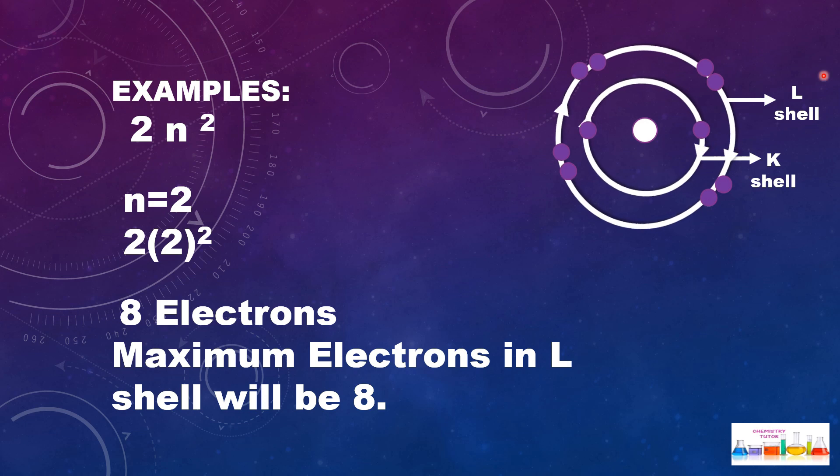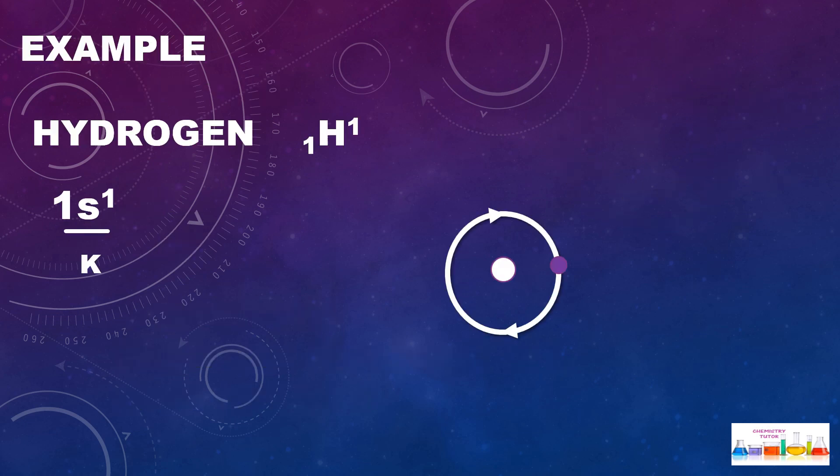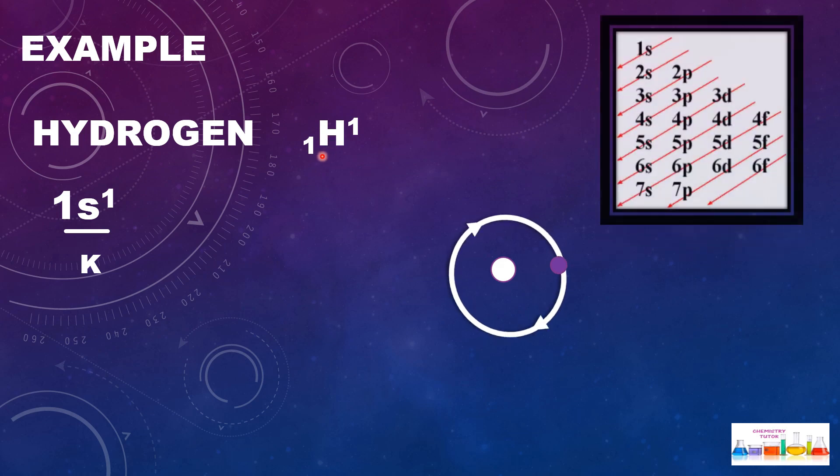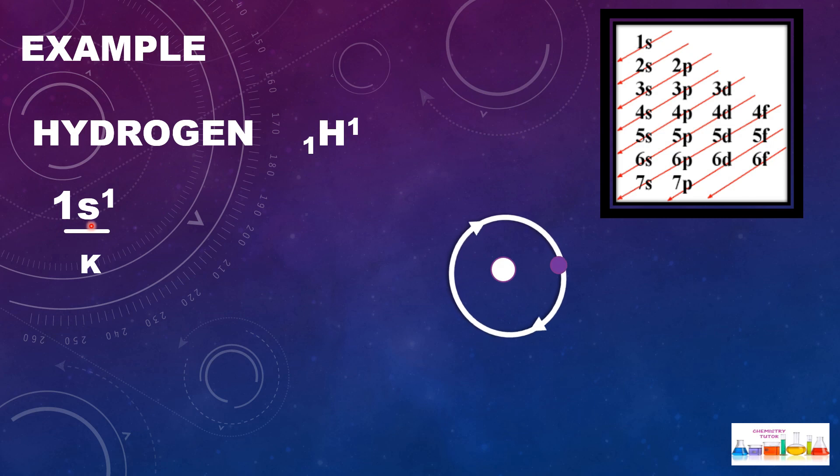The first shell is K shell with two electrons, and the second shell is L shell with total number of eight electrons. Now let's take the example of hydrogen.